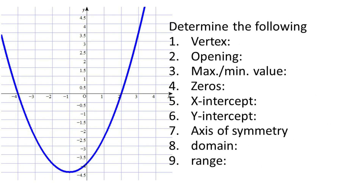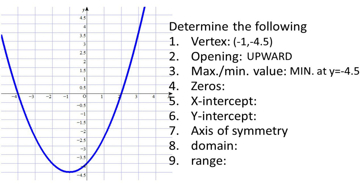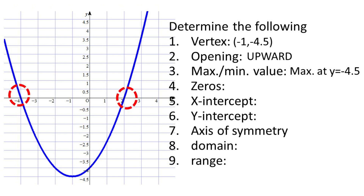Now let's look at a second graph and identify its properties. The vertex is at (−1, −4.5). The opening is upward, so based on the graph it has a minimum value. That minimum value is at Y equal to negative 4.5, which is the value of K in our vertex.